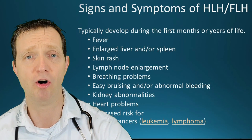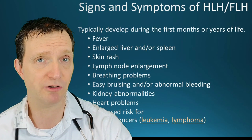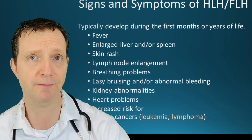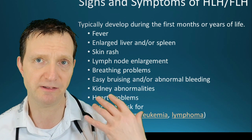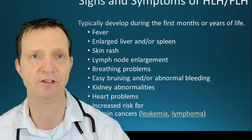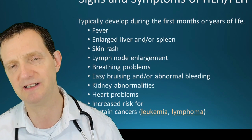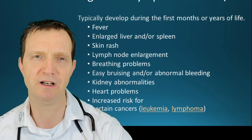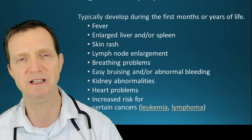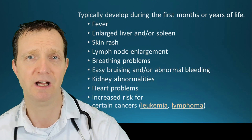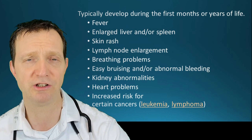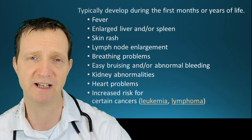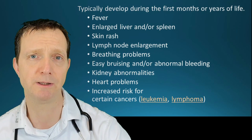So what are the signs and symptoms of HLH, either primary or secondary? For familial HLH, symptoms tend to develop in the first few months or years of life, but can also happen in adults. You tend to get a fever, enlarged liver or spleen, skin rash, lymph node enlargement, breathing problems, easy bruising or abnormal bleeding — indicating platelet dysfunction — kidney abnormalities, heart problems, and an increased risk of certain cancers, most notably leukemias and lymphomas.